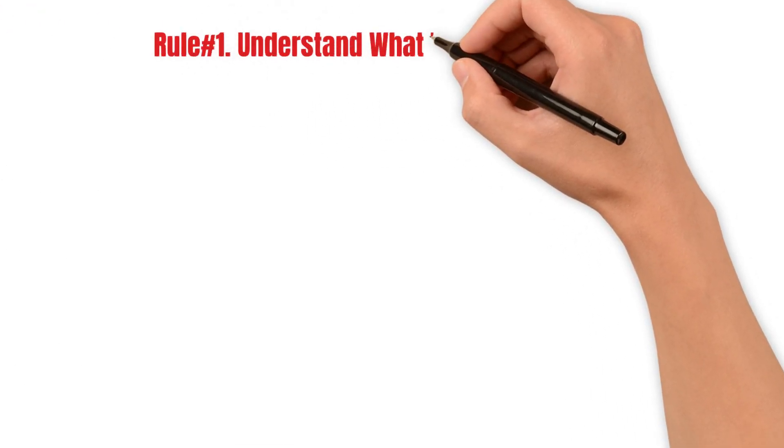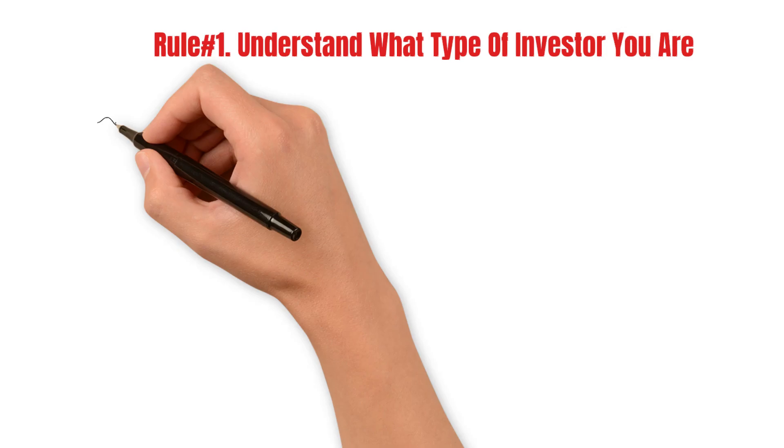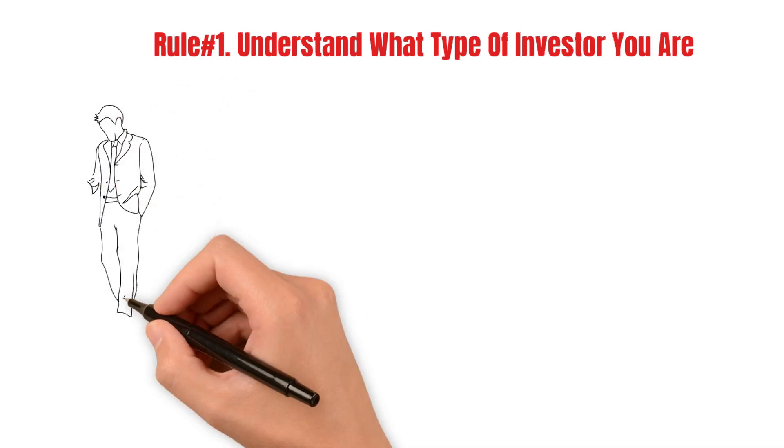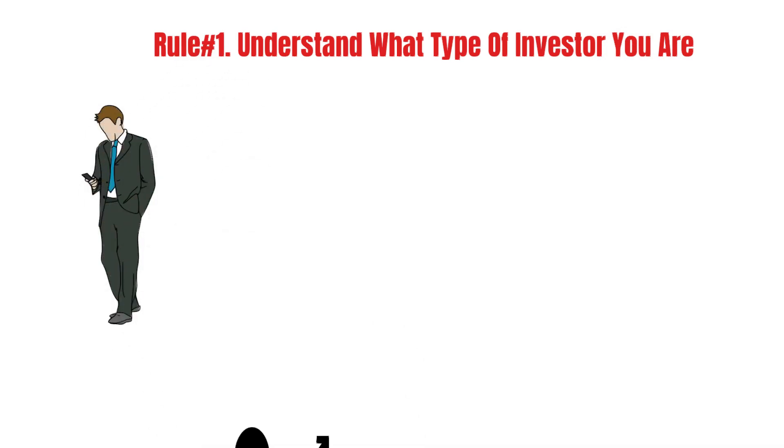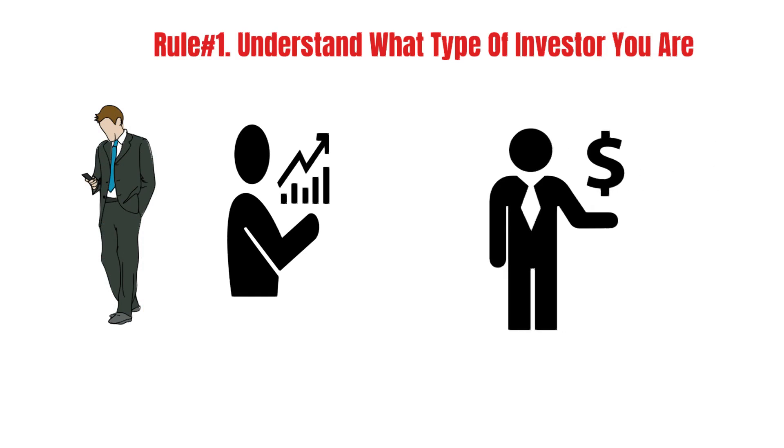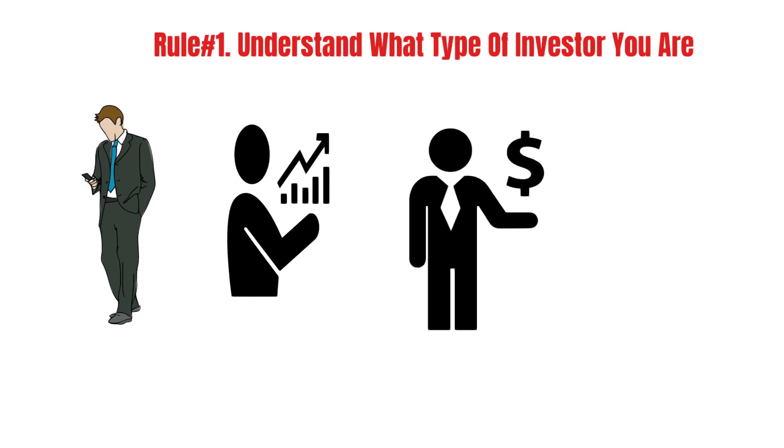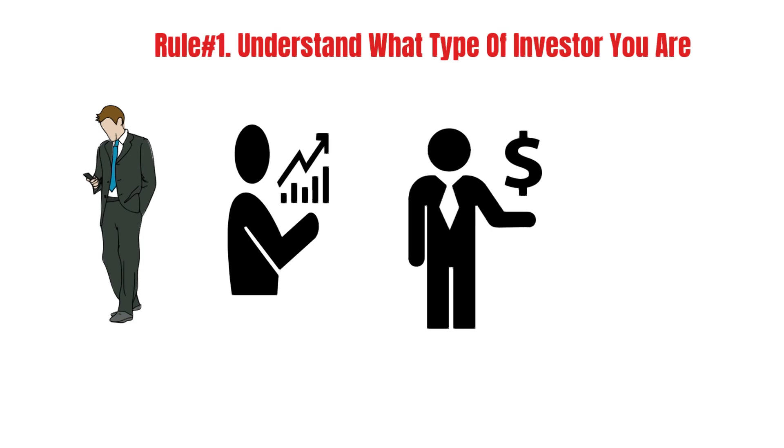Rule number one: Understand what type of investor you are. There are several types of people who invest in the market. The list includes speculators, intraday traders, short-term investors, long-term investors, and so on.